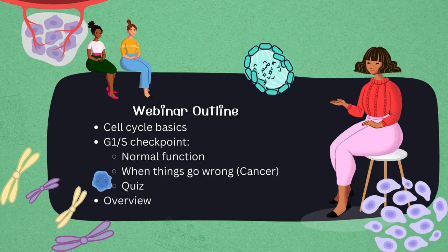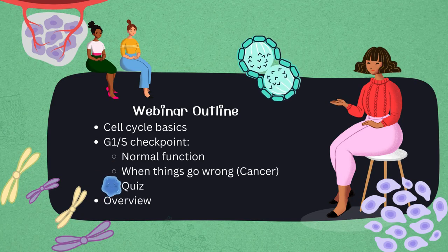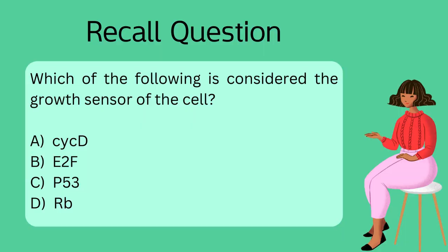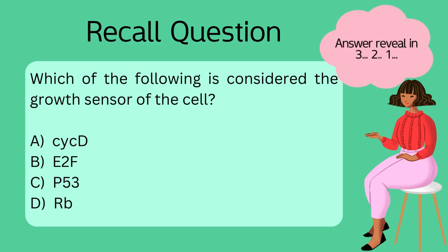Which of the following is considered the growth sensor of the cell? A, cyclin D; B, E2F; C, P53; or D, RB. Pause the video here if you need more time. If you guessed cyclin D, that is correct.